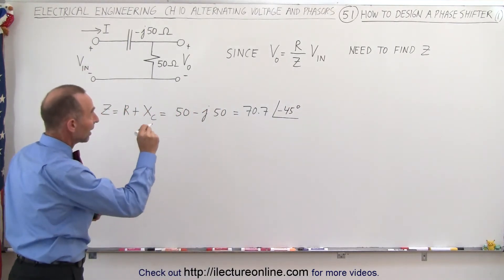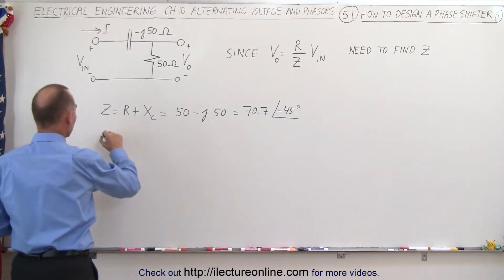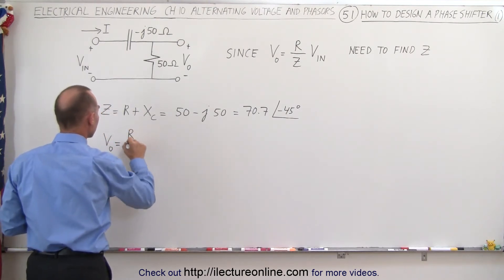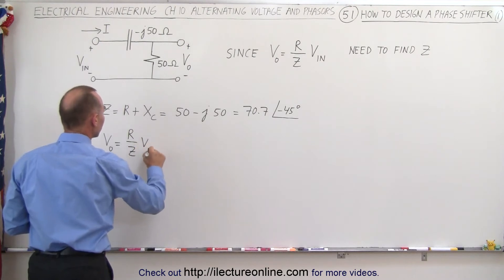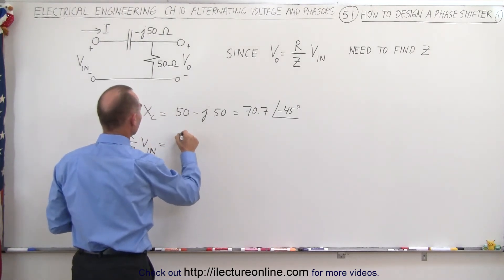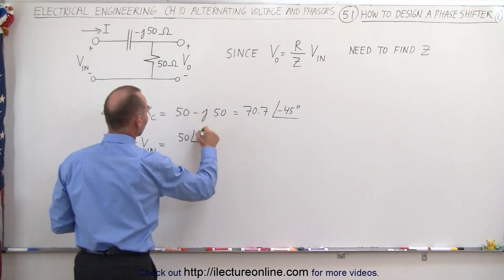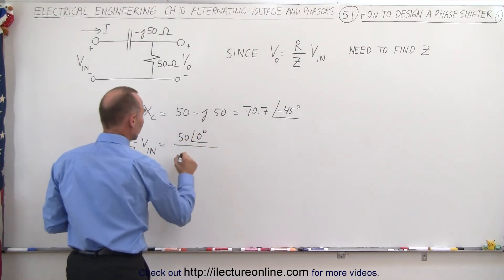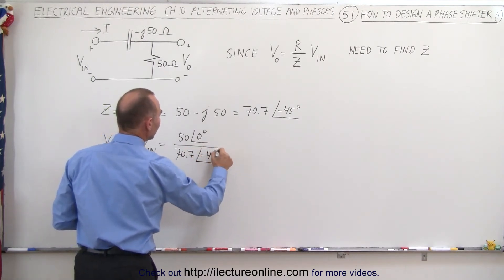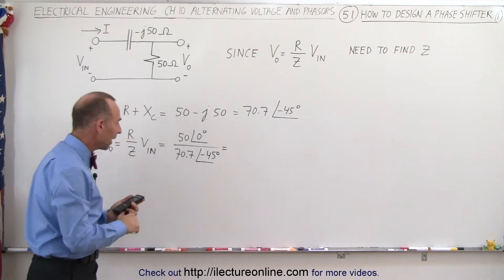Okay, now we're going to find the output voltage, so the output voltage is equal to R divided by Z times the input voltage. And so this is equal to R, which is 50 with a phase angle of 0 degrees, divided by Z, which is 70.7 with a phase angle of minus 45 degrees.